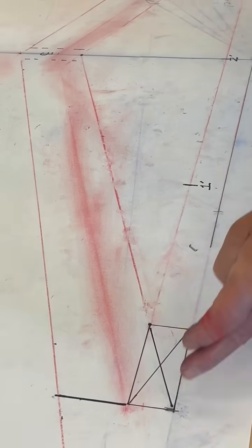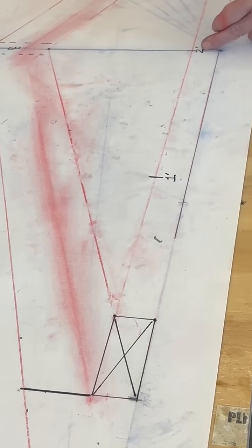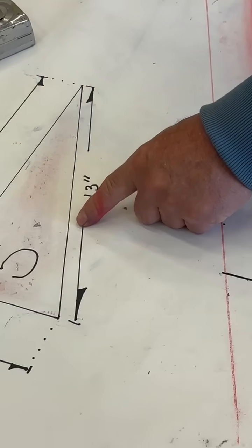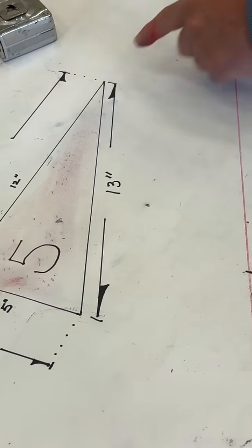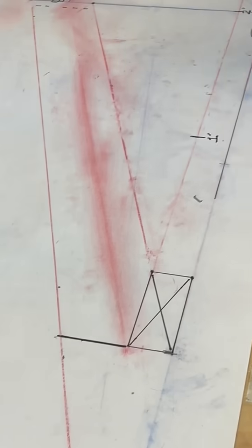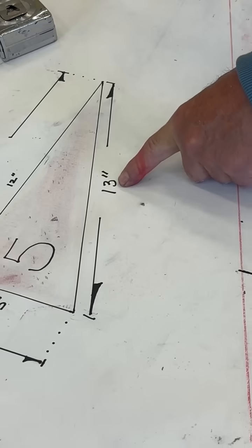This is the center line, so our span is 4 feet, our run is 2 feet. This is a unit of run up 5 in 12. That's how we get this.